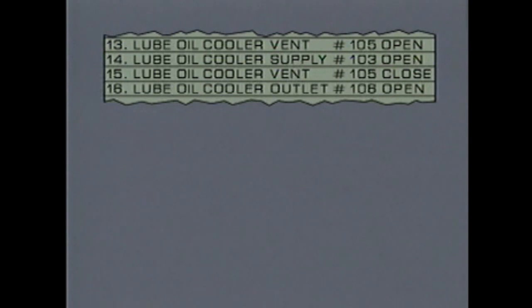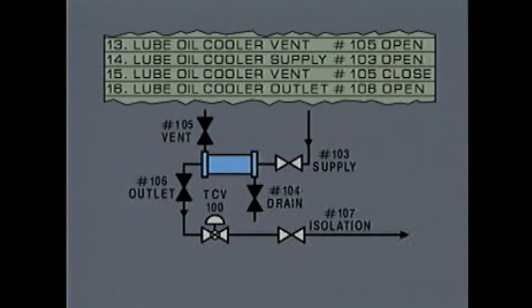This is a portion of a procedure checklist for a system similar to the cooling water system we just looked at. In this topic we've seen how flow diagrams can be useful when you're learning how a system operates. We've also looked at a couple of examples of how flow diagrams can help you line up valves in a system.